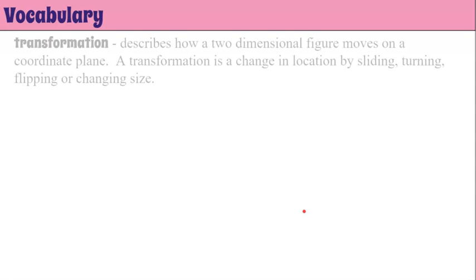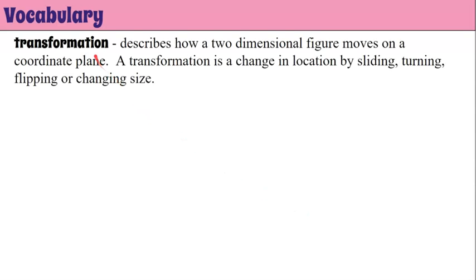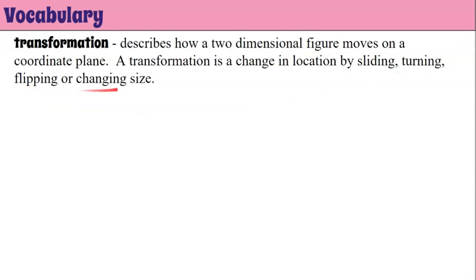We're going to begin by reviewing some key vocabulary words. A transformation describes how a two-dimensional figure moves on a coordinate plane. A transformation is a change in location by sliding or a translation, turning which is a rotation, flipping which is a reflection, or changing size which is a dilation.